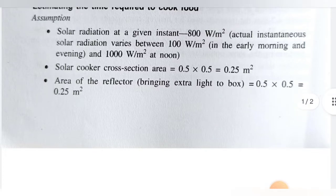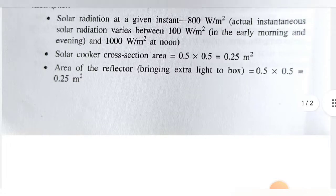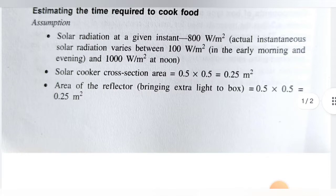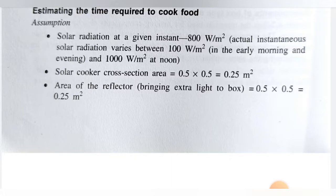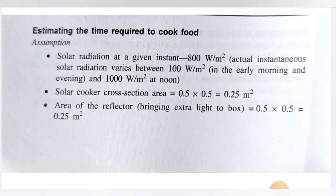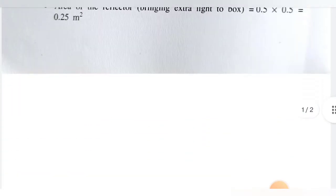Next, the solar cooker cross-section area — the cooker in which we are going to cook our food — is 0.5 × 0.5 meters, that is 0.25 m². The area of the reflector, which brings extra light to the box, is also 0.5 × 0.5 = 0.25 m². So both the cooker area and reflector area are 0.25 m² each.